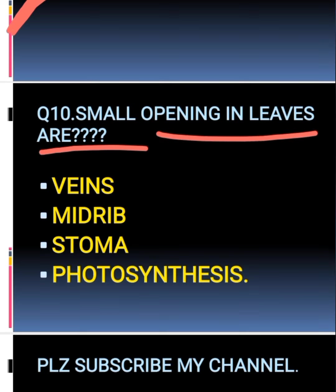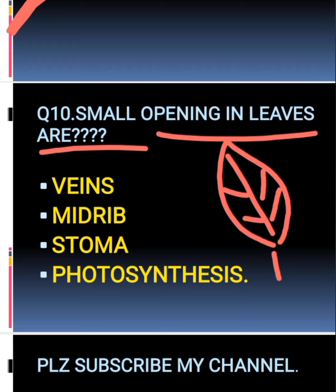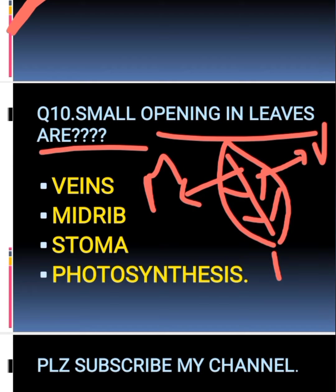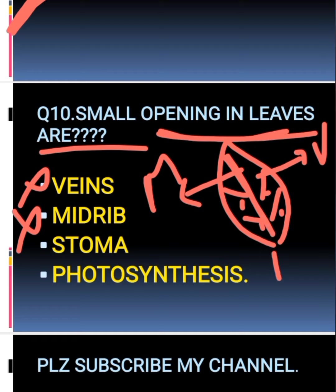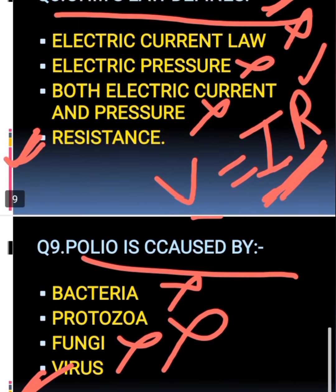The tenth question: small openings in the leaves are called what? In a leaf, the lines are called veins, the middle line is called the mid-rib, and the tiny small holes or openings are called stoma. We would not say photosynthesis because that is a process by which plants make their own food. The correct answer is stoma.